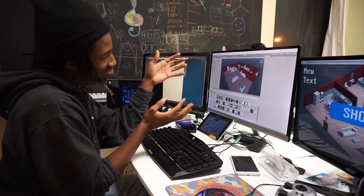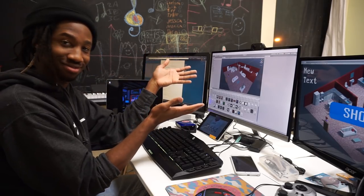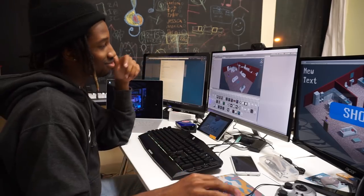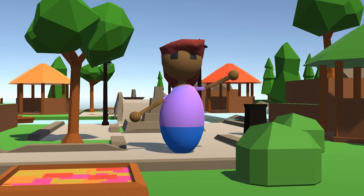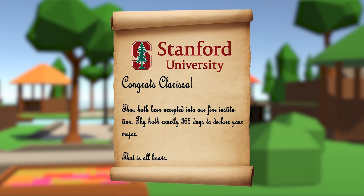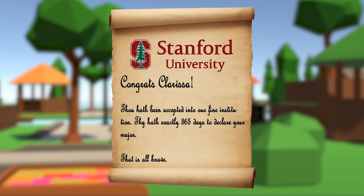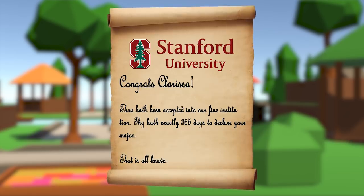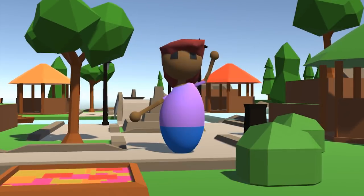All right, and here it is. This is our butterfly effect simulator, and it works like so. This is Clarissa. And at the start of the simulator, Clarissa gets an acceptance letter from Stanford for university that clearly states she has exactly 365 days to declare a major from the time of the letter received.